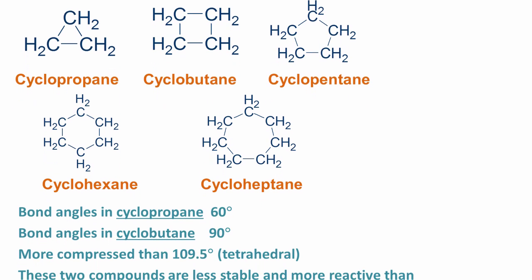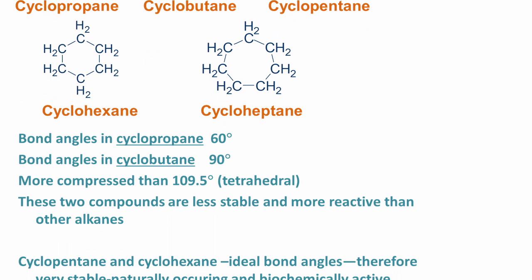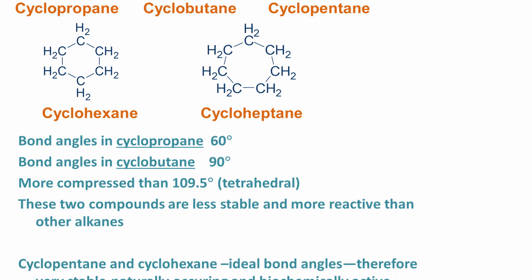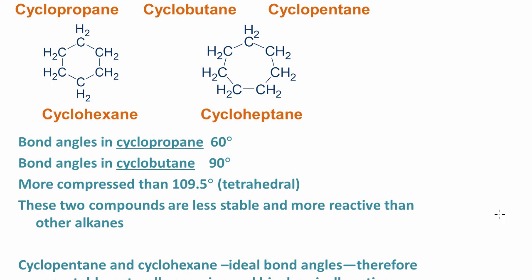The bond angles in cyclopropane are 60 degrees and in cyclobutane are 90 degrees. These are not close to the ideal bond angles of 109.5 degrees, so they're much more compressed and there's more strain in the bonds. That means cyclopropane and cyclobutane are less stable than other alkanes, so we're not going to be dealing with those.